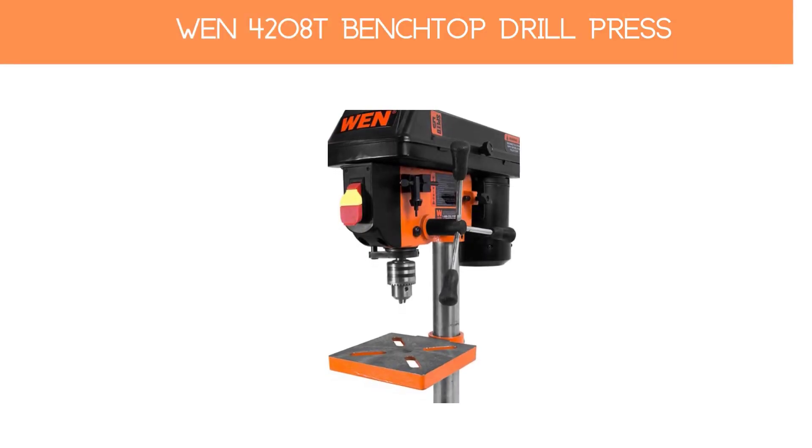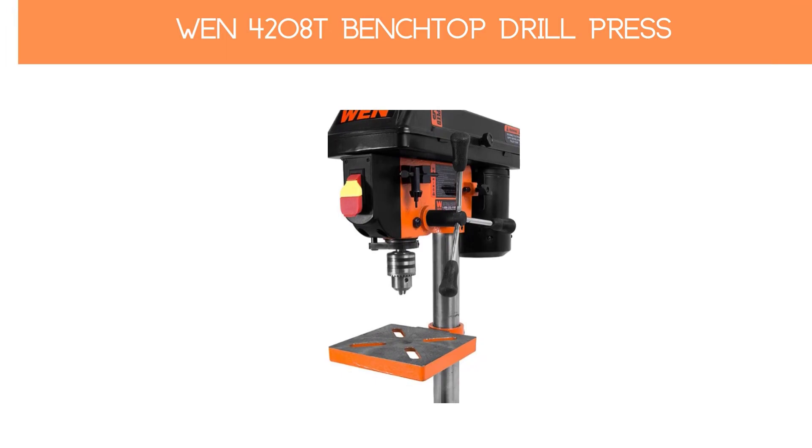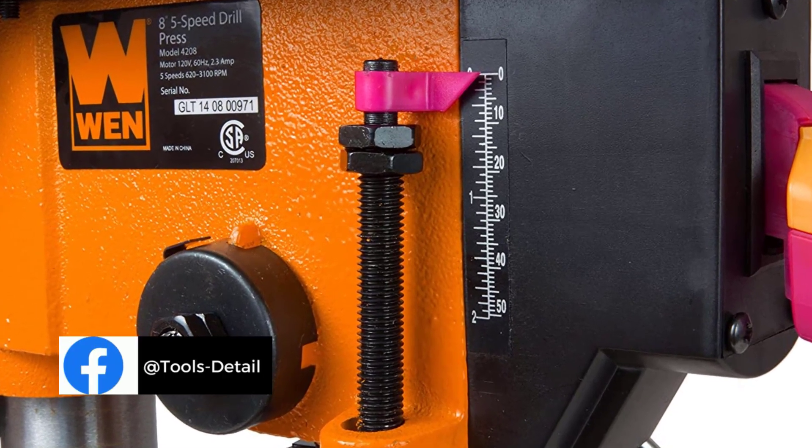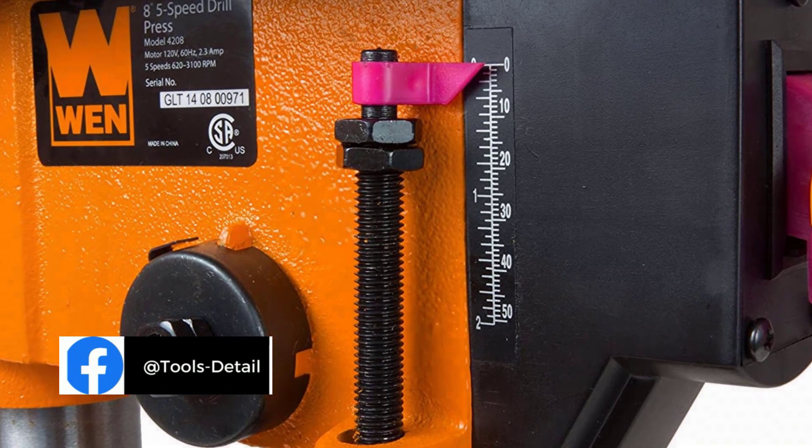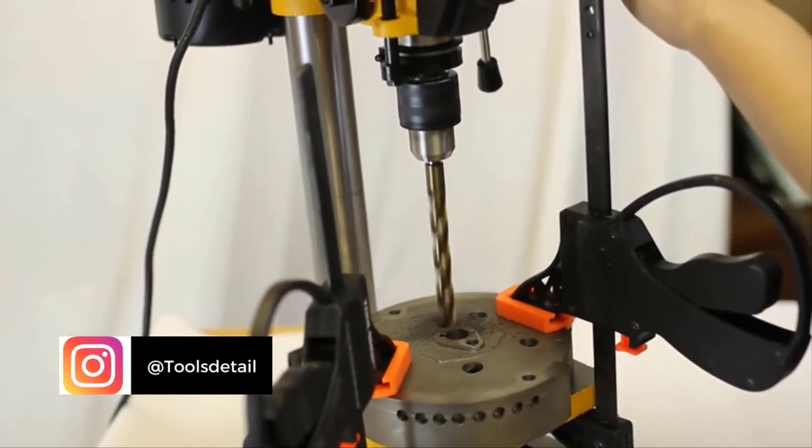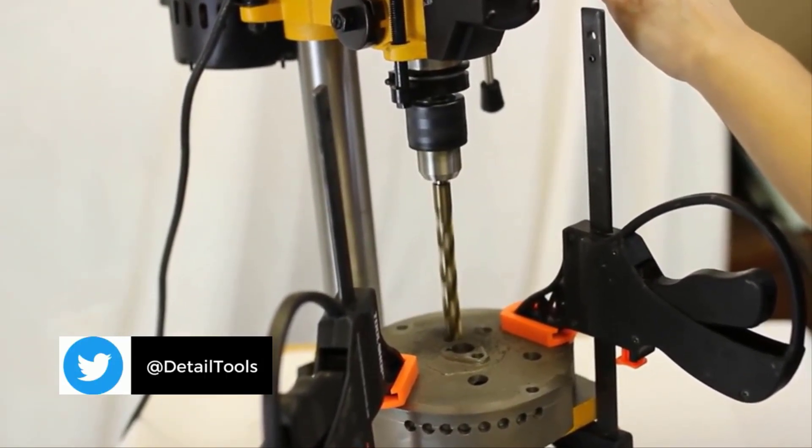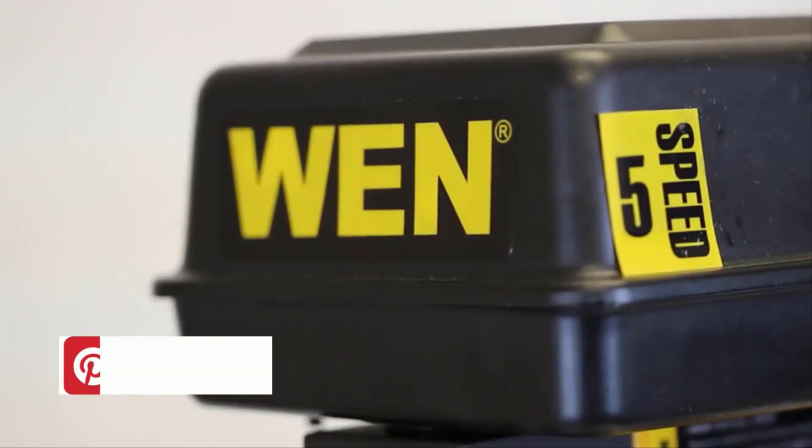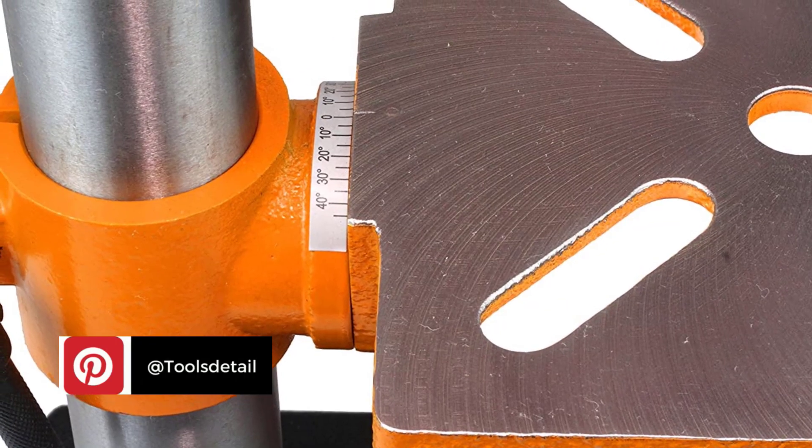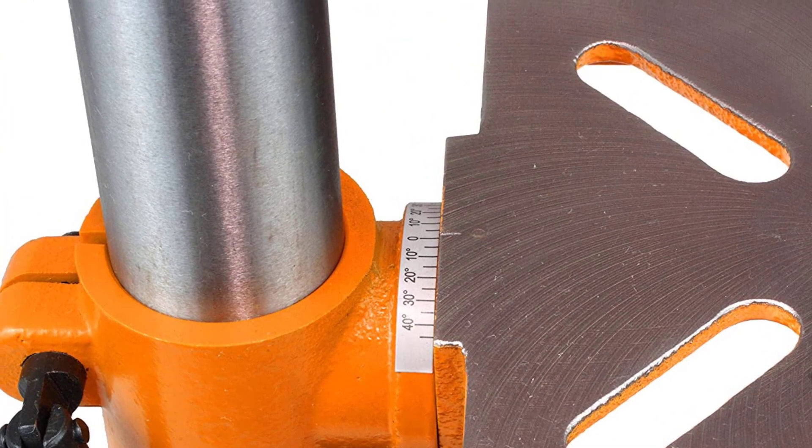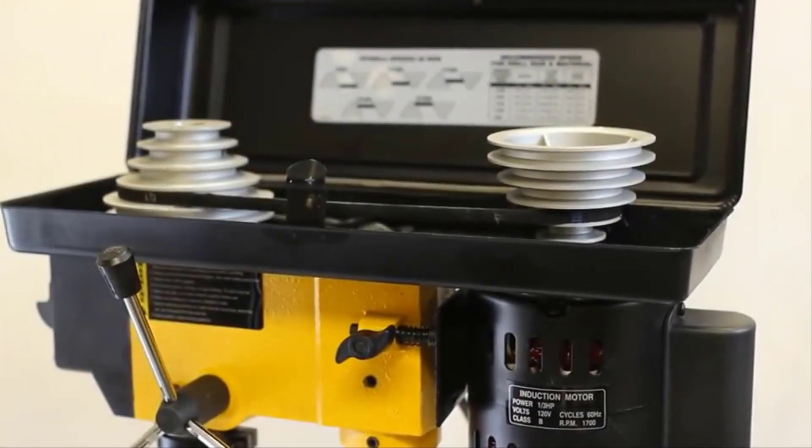Number 1: WEN 4208T Benchtop Drill Press. WEN drill press will facilitate your drilling job in many ways. It will allow you to limit the spindle travel to get repeatable drilling tasks done accurately. You can work on various materials like plastic, wood, metal, etc. The WEN 4280T is one of the best tools to provide precise and accurate holes. The WEN drill press has got a perfect size to carry to your job place and also for the shop.